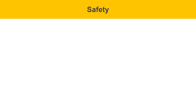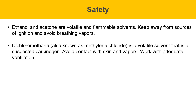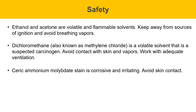This slide covers safety in today's experiment. Ethanol and acetone are flammable and volatile solvents — keep these away from sources of ignition and avoid breathing the vapors. Dichloromethane, also known as methylene chloride (CH2Cl2), is a volatile solvent that is a suspected carcinogen. You should avoid skin contact with this solvent and also avoid its vapors. Work with adequate ventilation. Ceric ammonium molybdate stain is corrosive and irritating — avoid skin contact with this material.